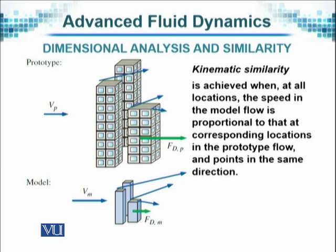When it comes to kinematic similarity, when that is achieved at all locations, the speed in the model flow is proportional to that at the corresponding locations in the prototype flow. So it doesn't have to be the same speed because it cannot be done so, but it has to be proportional and have relevance.